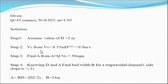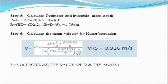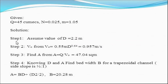V₀ was calculated as 0.9 but Kutter's equation gives V = 0.926, so V > V₀. Therefore, we must increase the value of d and try again, because V and V₀ are not equal. We repeat the procedure by revising the depth — if 2 m doesn't match, try d = 2.1, 2.2, etc. until V and V₀ are nearly equal.